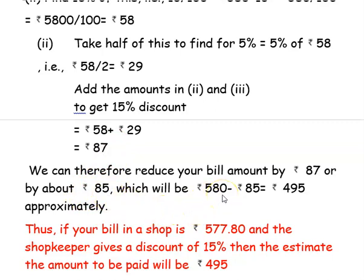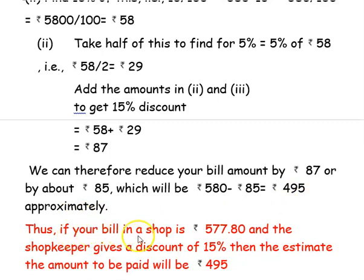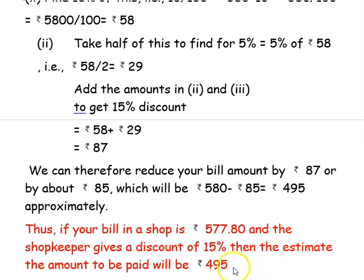Rupees 580 minus rupees 85 gives rupees 495. Thus, if your bill in a shop is rupees 577.80, rounded up to rupees 580, and the shopkeeper gives a discount of 15 percent, then the estimated amount to be paid is approximately rupees 495.